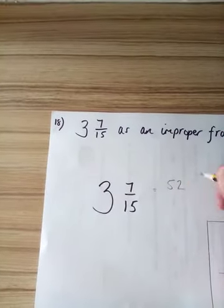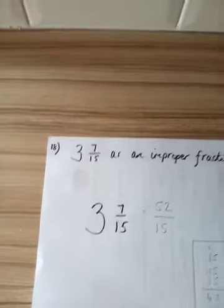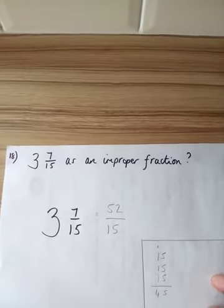Add 7 is 52. And remember, we put the 52 as the numerator, and the denominator stays the same. So 3 and 7/15 as an improper fraction is 52/15. And again, there might be these questions next week, so look back at this video. It may help you.